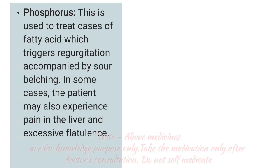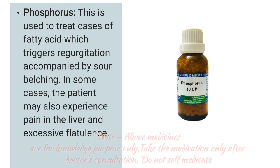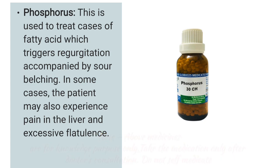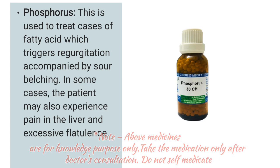The third is Phosphorus. This is used to treat cases of fatty liver which trigger regurgitation accompanied by sore belching. In some cases, the patient may also experience pain in the liver and excessive flatulence.